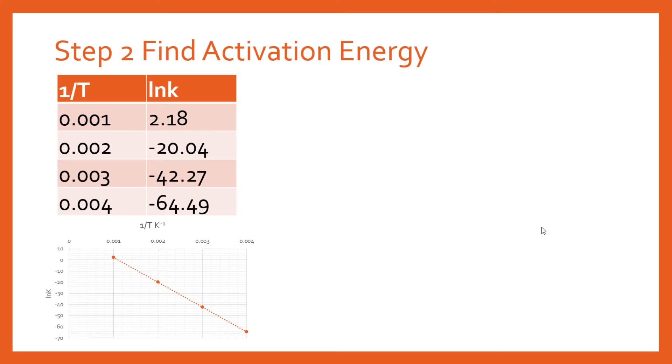The second step is we can now find the activation energy. To do this, we need our value of the gradient that we've just calculated. We can then get our equation for this line: ln k equals minus Ea over RT plus ln A. This is in the form y equals mx plus c. We need to work out how this matches up with y equals mx plus c. Our x is one over T, the coefficient in front of one over T is going to be minus Ea over R. So our gradient is simply going to be minus Ea over R.